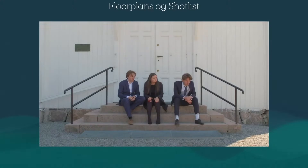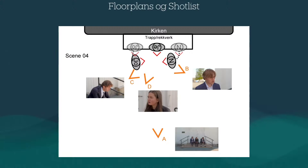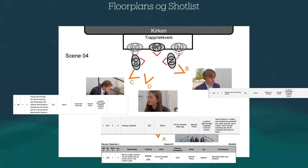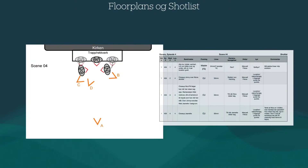På kartet er alle fire kamerainnstillingene representert med en V og merket med en bokstav. Skuespillernes bevegelser er grovt tegnet opp og gir crewet en følelse av hvordan de ferdige bildene skal se ut. I tillegg har scenen en shotlist som gir detaljert informasjon om hvilke linser, lys, utsnitt og annet utstyr som skal brukes på hvert enkelt shot. Med disse to dokumentene er scenen dekonstruert og nøye planlagt, og informasjonen lett tilgjengelig for crewet.